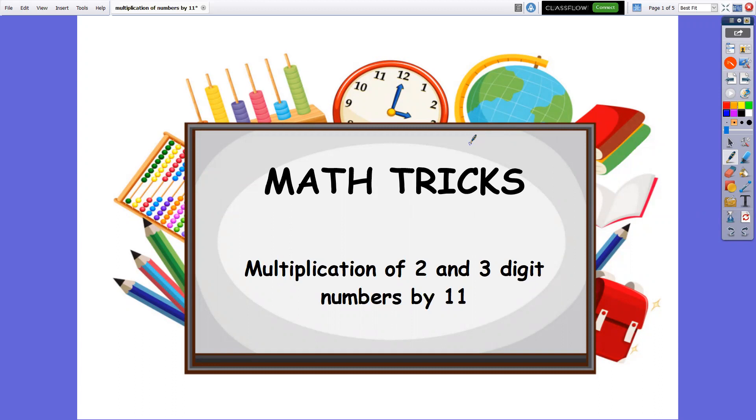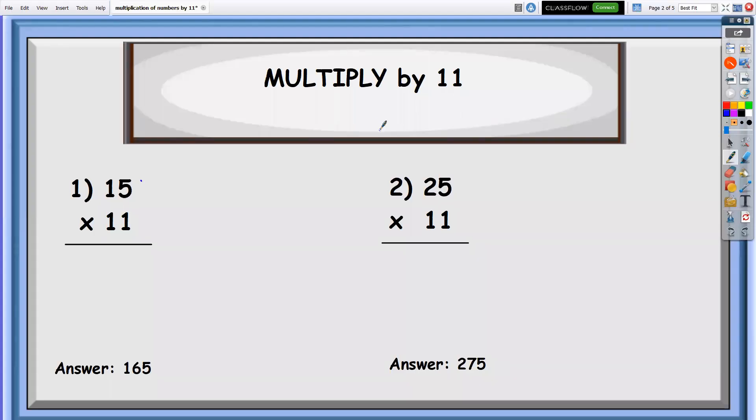So we will do another math trick here, and that is multiplication of two and three digit numbers by 11. In here, we are going to multiply these numbers mentally. We can just multiply this in less than five seconds.